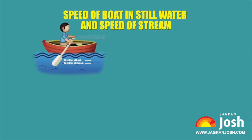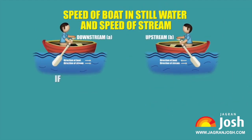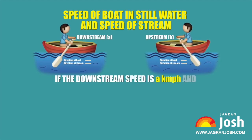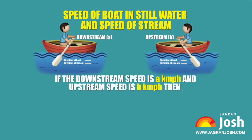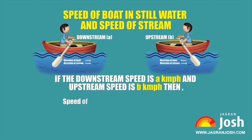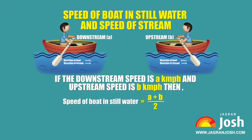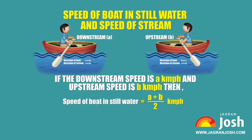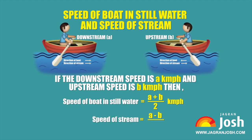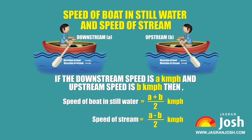Speed of boat in still water and speed of stream: If the downstream speed is a km per hour and upstream speed is b km per hour, then speed of boat in still water = (a + b) / 2 km per hour, and speed of stream = (a − b) / 2 km per hour.